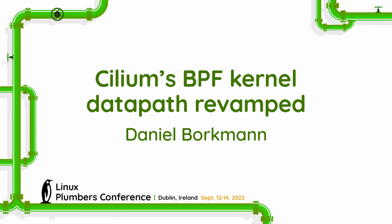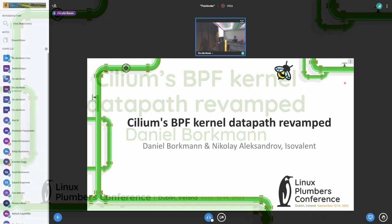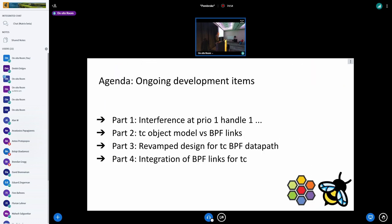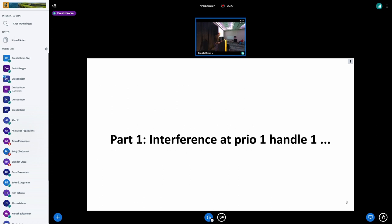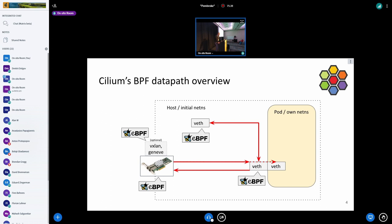Hello everyone, and welcome to this talk about the Cilium BPF kernel data path reframe. I want to cover essentially four parts: the motivation from a recent incident in a user environment, some context on the TC object model and BPF links, the reframe design of the TC BPF data path, and finally the BPF link integration — including the interference at priority one, handle one.